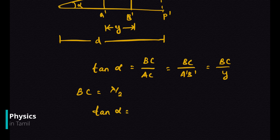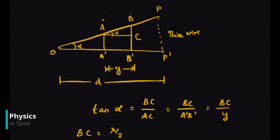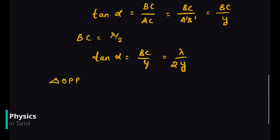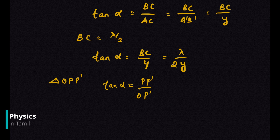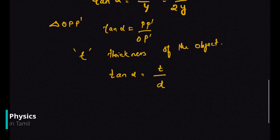The path difference between the two reflected rays must equal lambda by 2, which is nothing but BC. So tan alpha equals BC divided by y, and substituting BC equals lambda divided by 2y. From the larger diagram with triangle O-P-P prime, tan alpha also equals P-P prime divided by O-P prime. P-P prime is the thickness t, and O-P prime is the distance d. So tan alpha equals t divided by d, giving us lambda divided by 2y equals t divided by d.